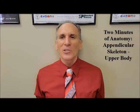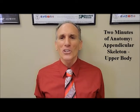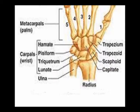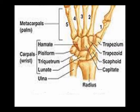Hello and welcome to Two Minutes of Anatomy. I am Dr. Donald Ozzello of Championship Chiropractic in Las Vegas, Nevada. The appendicular skeleton is comprised of the upper extremity and the shoulder girdle and the lower extremity and the pelvis. Today I'm going to speak about the appendicular skeleton of the upper body, which is comprised of the upper extremity and the shoulder girdle.